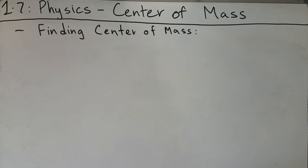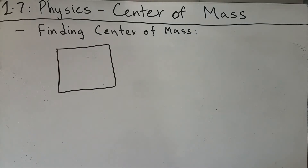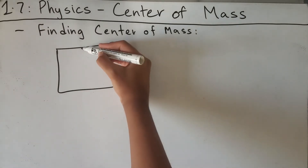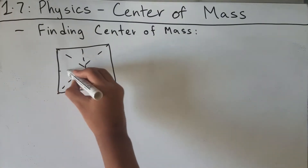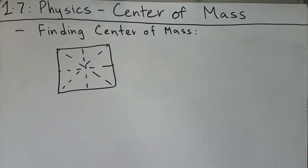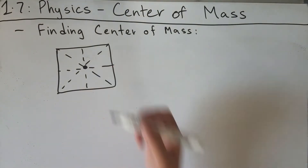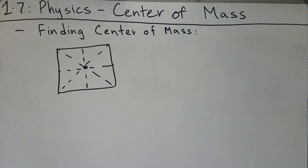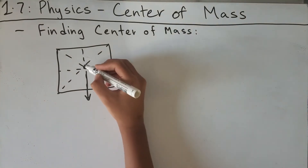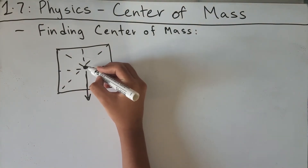Now let's talk about finding the center of mass for some regular objects, like a cube. A cube has many lines of symmetry, and we can draw them from the center. All of these lines intersect at a common point, which is the center of mass of the cube. We can also call it the center of gravity, and gravity will appear to pull it from the center of the cube.